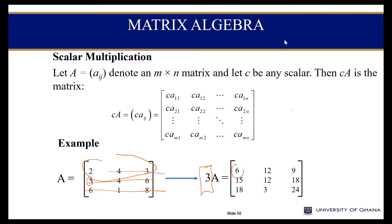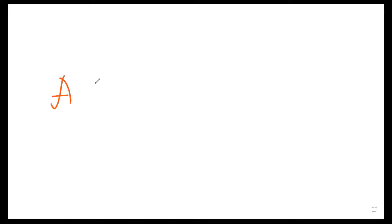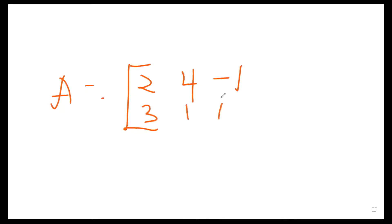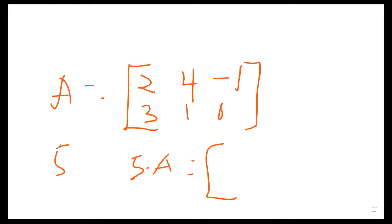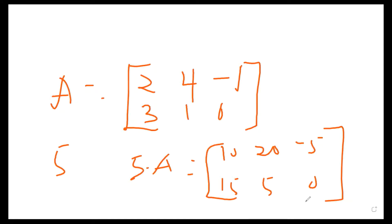For example, if I have matrix A given as [2, 4, -1; 3, 1, 0] and I have a scalar of 5, and I'm to multiply 5 by matrix A, that gives me 5 times 2 = 10, 5 times 4 = 20, 5 times -1 = -5, then 15, 5, and 0. What I have done is simply multiply the scalar to the given matrix.